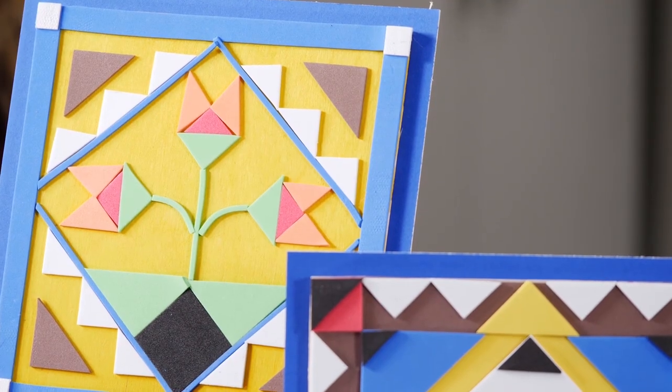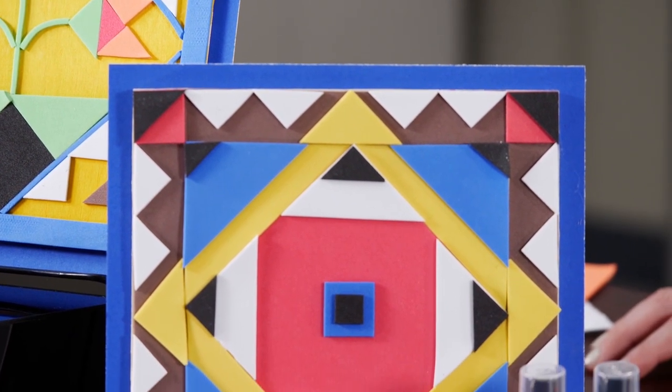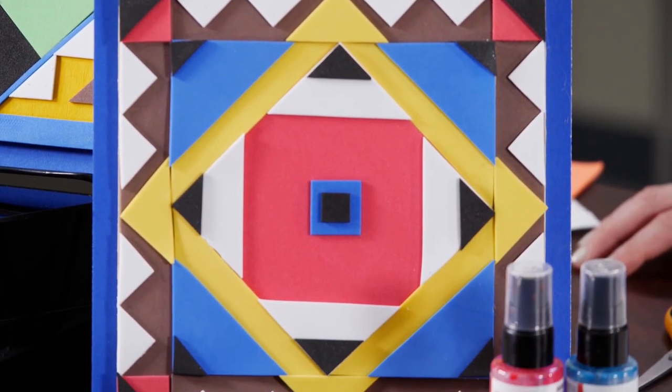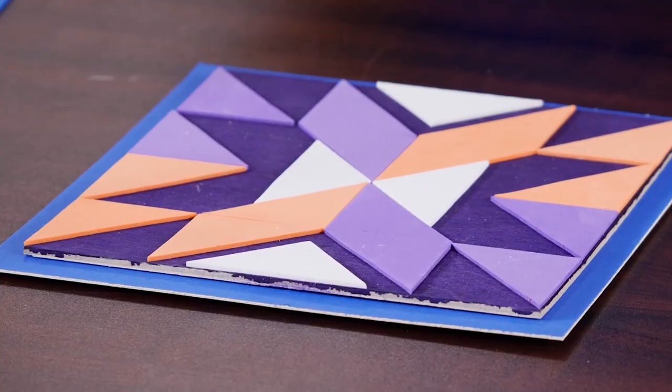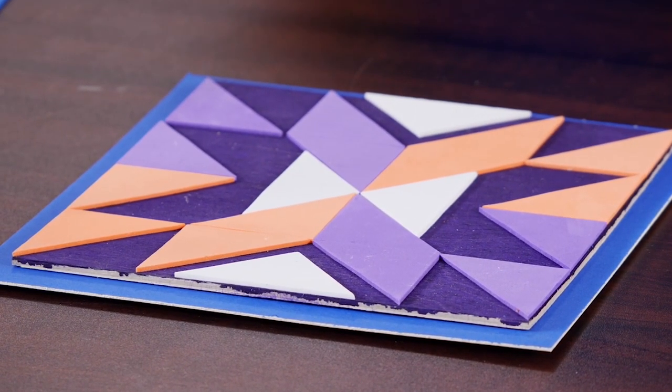While the earliest American barns were not usually painted at all because of the expense, beginning in the mid-1800s, they were often decorated with different types of folk art. This included colorful wood quilt blocks that were affixed to the peak of the barn.